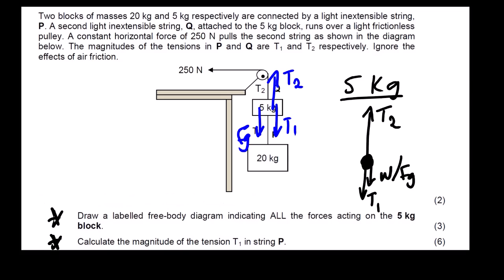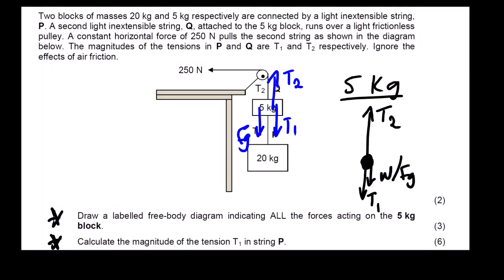The free body diagram will be T2, T1, and then we have weight or FG. It's a dot representing an object. So we have T2, we have T1, then we have weight. So this is the free body diagram. The mark allocation for this question will guide us on how many forces are acting on this block. Since it's three marks, just know that we are going to have three forces. So this is our free body diagram.